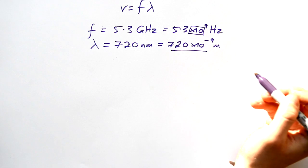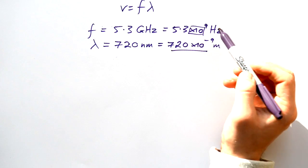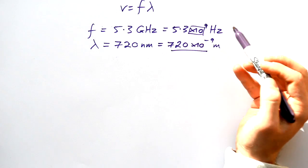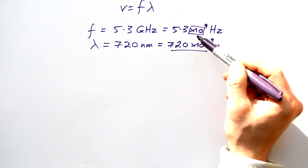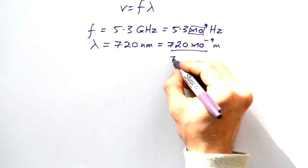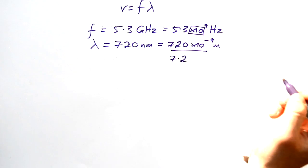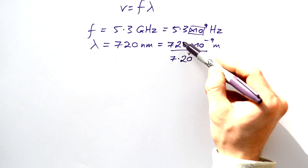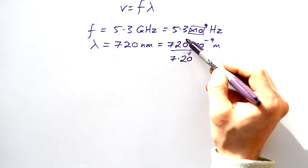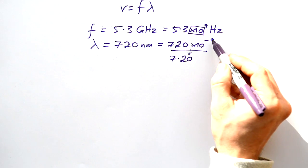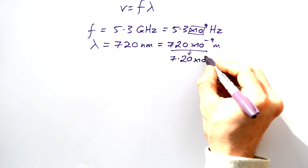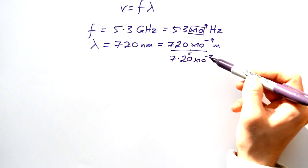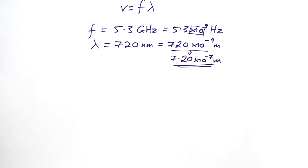Technically this still isn't in standard form because standard form really should just have one digit in front of the dot. You wouldn't get marked down if you put this down as a number, but let's just figure out what this would be if I put 7.20. So I'm getting rid of two powers here, so I have two extra powers here. So my minus 9 is actually going to become minus 7 meters. These are both as correct as each other, but this is your proper standard form.